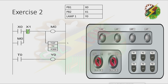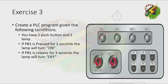Now let's go to our next exercise. Create a PLC program given the following conditions. You have one push button and one lamp. If PB1 is pressed for 2 seconds, the lamp will turn on. If PB1 is released for 3 seconds, the lamp will turn off.